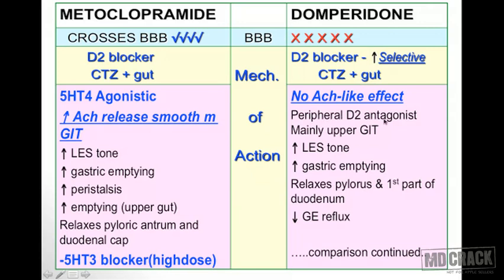The effects of metoclopramide's 5-HT4 agonism and increased acetylcholine release include: increase in LES tone, stimulation of gastric emptying, stimulation of peristaltic movement, stimulation of emptying of the upper gut, and relaxation of the pyloric antrum and duodenal cap. For domperidone — no acetylcholine-like effect; it acts via peripheral D2 blocking on the upper GIT, increases LES tone, stimulates gastric emptying, relaxes the pylorus and first part of duodenum, and decreases gastroesophageal reflux.